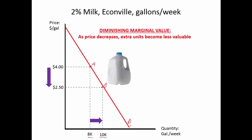The technical term for what's happening here is diminishing marginal value. As price decreases, extra units become less and less valuable. Think about if milk were extremely cheap — $1 a gallon, $0.50, a dime a gallon — how much would you buy? There's a finite amount. This demand curve is going to intersect the quantity axis at a price of zero. There's a finite amount of milk you can buy, take home from the store, or store in your refrigerator. The biggest limiting factor is how much you could actually use.